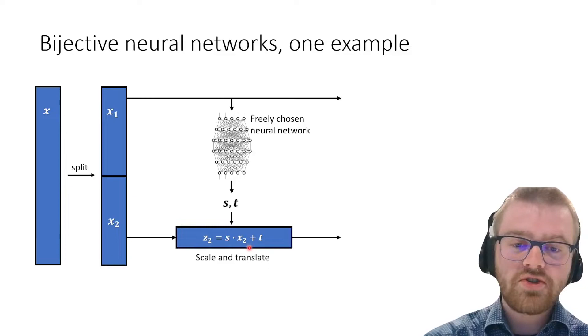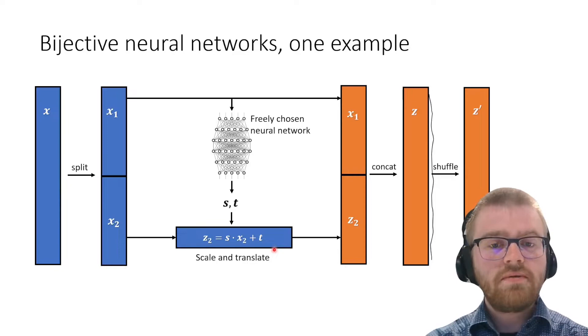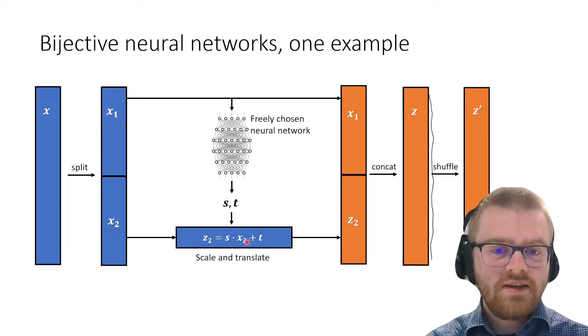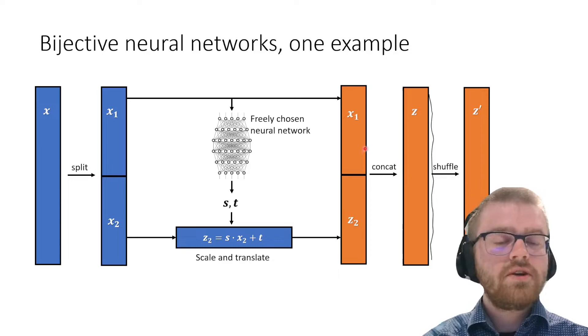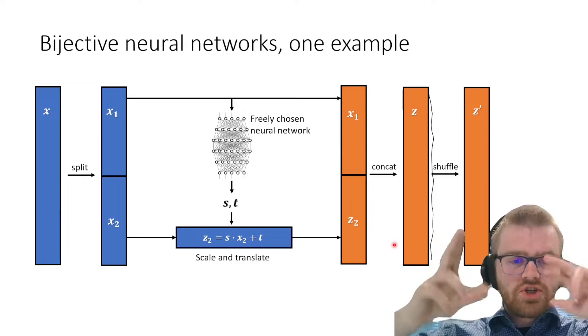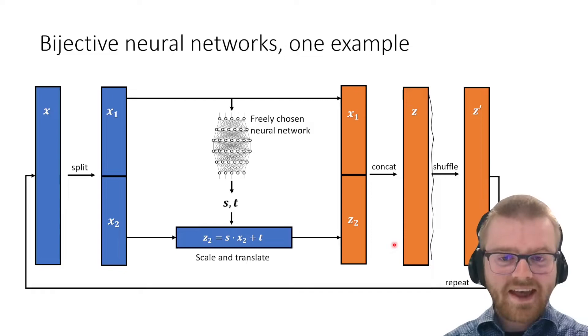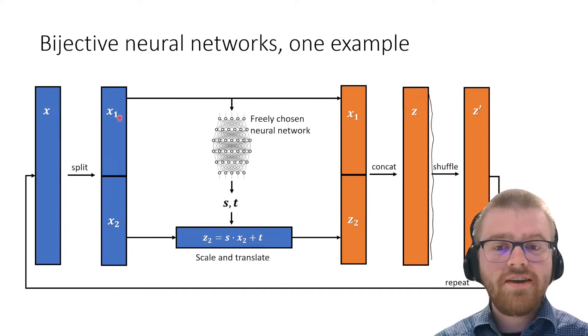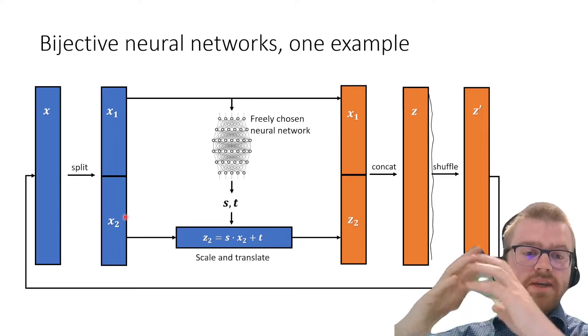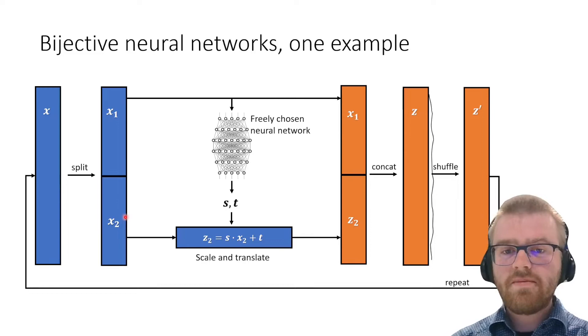We do a very simple operation on the second part. We say that z2 is scale times x2 plus translate. Then we copy x1 over as is, put z2 on the bottom, concatenate the two to create z, and then randomly shuffle the order of dimensions. Why? Now we can repeat this operation again and again, making sure every part of x gets its turn being the conditioning part on top as well as the part being scaled and translated on the bottom.